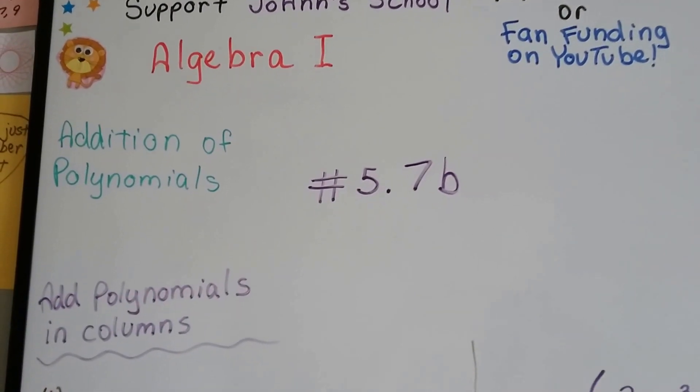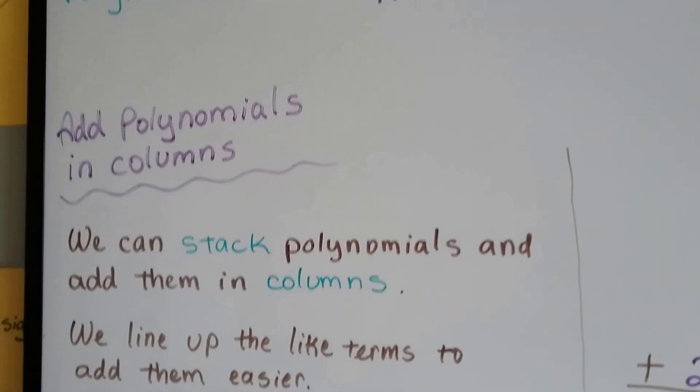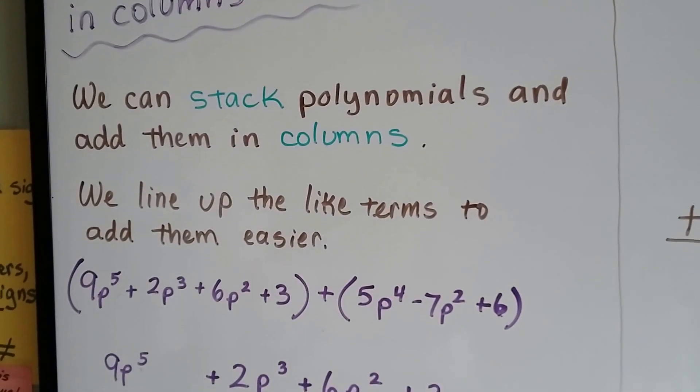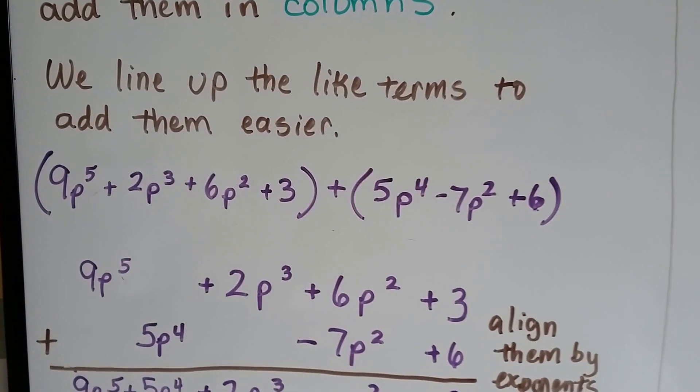Algebra 1 number 5.7b. We're talking about adding polynomials. We're going to add them in columns. We can stack polynomials and add them in columns. We line up the like terms to add them easier.